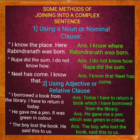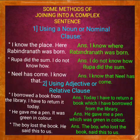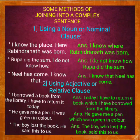Next example — 'Rupa did the sum' and 'I don't know how.' If I join them into a complex sentence, the answer will be: 'I don't know how Rupa did the sum.' Here, 'I don't know' is the independent clause and 'how Rupa did the sum' is the subordinate noun clause.